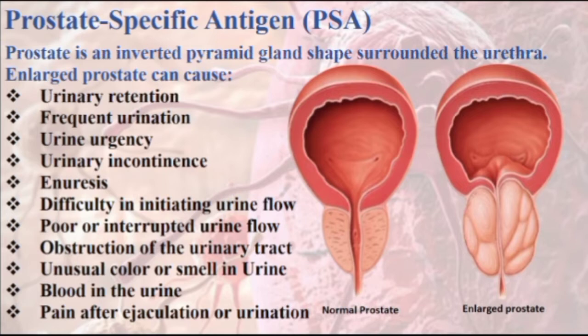The prostate is an elastic fibromuscular capsule and contains glandular tissue as well as connective tissue in the form of an inverted pyramid, and surrounds the urethra. The prostate gland contracts during ejaculation and adds an alkaline milky substance to the semen.